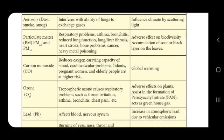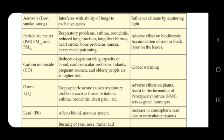Aerosol, dust, smoke, and smog directly reduce visibility and accumulate on the body, causing severe lung and respiratory problems. They also influence the climate. Particulate matter — fine particles in the atmosphere designated as PM2.5 and PM10 — causes respiratory problems, asthma, bronchitis, reduced lung function, lung fibrosis, heart stroke, bone problems, cancer, and heavy metal poisoning. It also has adverse effects on biodiversity.